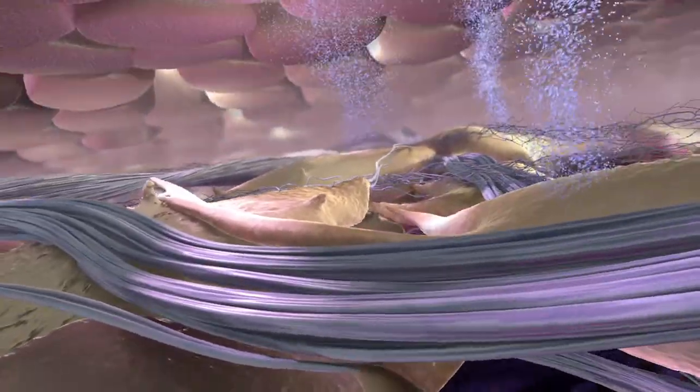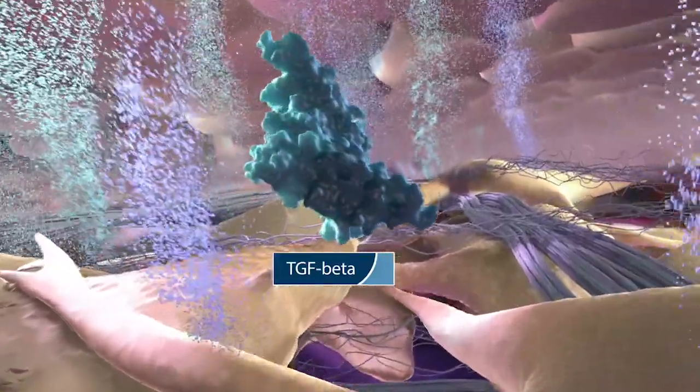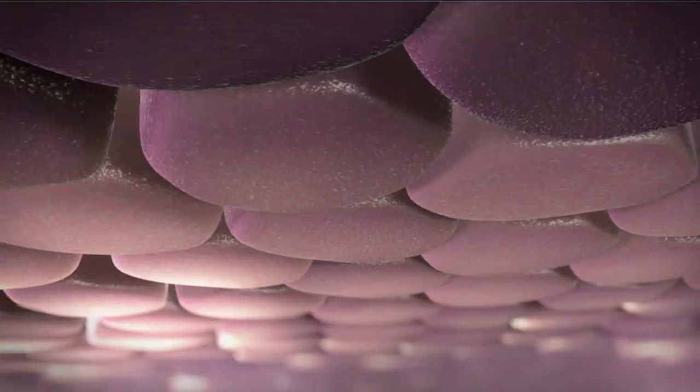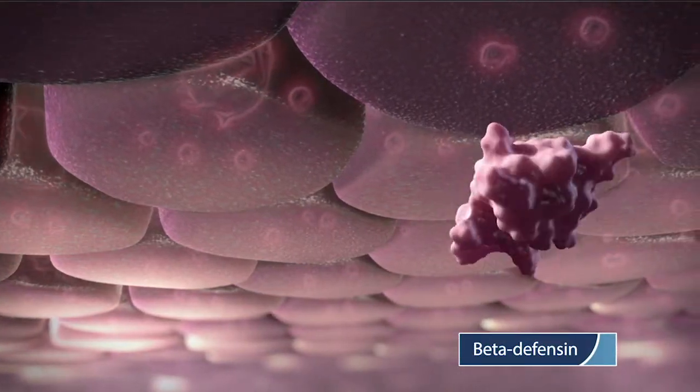Both cell types secrete transforming growth factor beta, influencing epidermal morphogenesis and matrix synthesis within the product. The keratinocytes also produce beta-defensin, an antimicrobial protein.